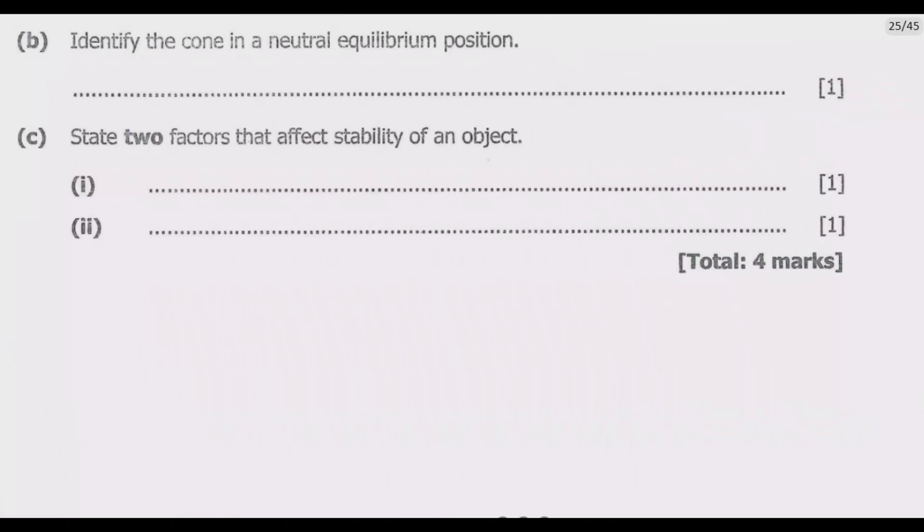Question B: identify the cone in a neutral equilibrium position. We are looking for the one in neutral equilibrium position. Before we look at the positions, we need to understand what is equilibrium. If an object is said to be in a state of equilibrium, then all the forces which act upon the object are balanced. Then what are the three types of equilibrium?